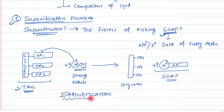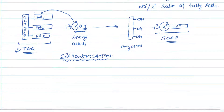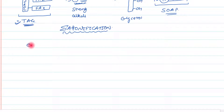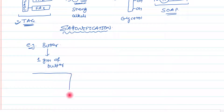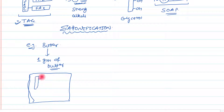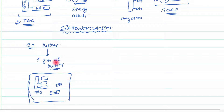Now that we understand saponification, let's try to understand the saponification number. To understand this, let's take an example of butter. Take one gram of butter. Butter contains many triacylglycerol molecules, and also contains certain free fatty acids. When you take one gram of butter and add potassium hydroxide, the potassium hydroxide is added stepwise.